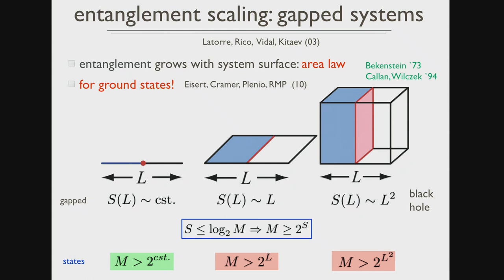The surface of a one-dimensional system, if you cut it into two, is of course a point. So that doesn't grow if you go to the thermodynamic limit. What you would expect is if that is true, entropy is constant — entanglement is a constant. In 2D it's linear. In 3D it's area — it's L squared — which is where the black hole physics come from.